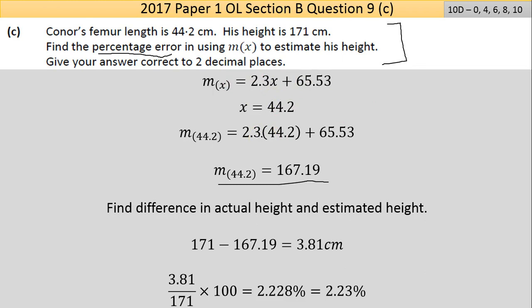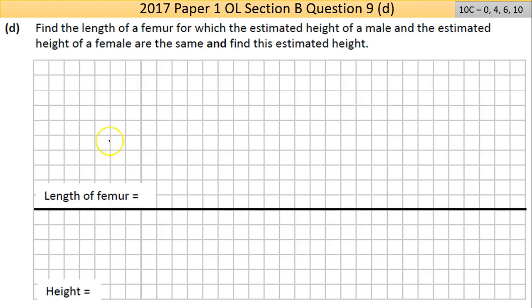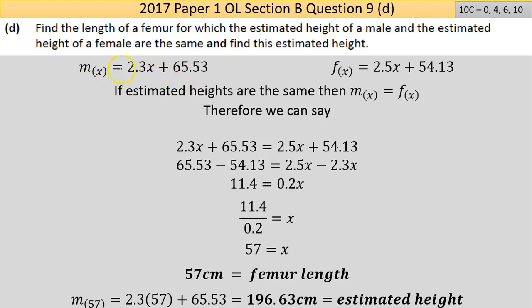Part D says find the length of a femur for which the estimated height of a male and the estimated height of a female are the same. This basically means when both functions are equal to each other. So I'm putting the male function equal to the female function: 2.3x + 65.53 = 2.5x + 54.13.